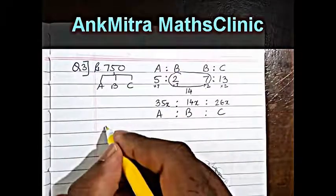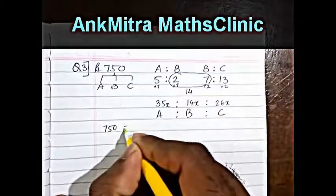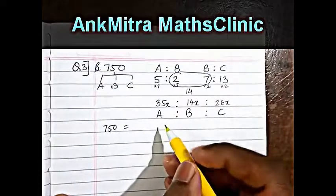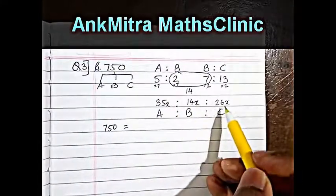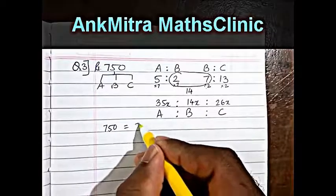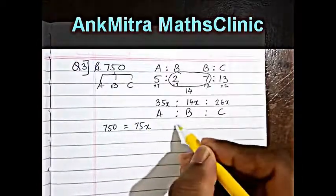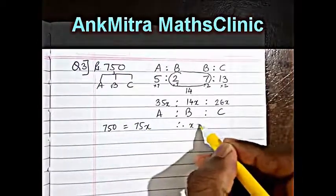So the total value will be 750 equal to 35x plus 14x plus 26x, which comes to 75x. Therefore x is equal to 10.